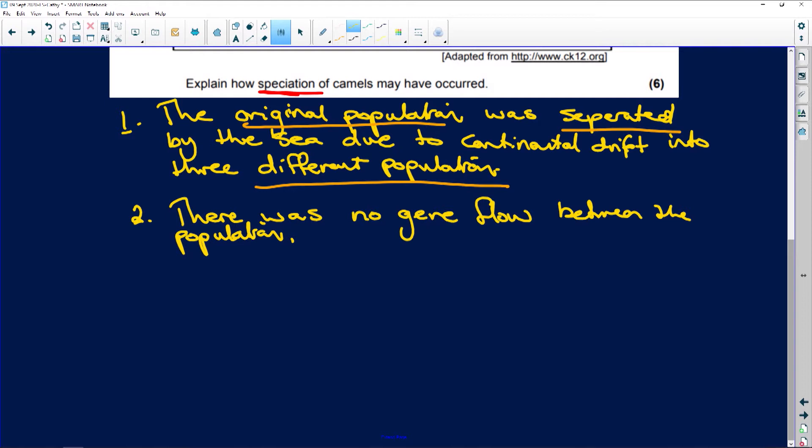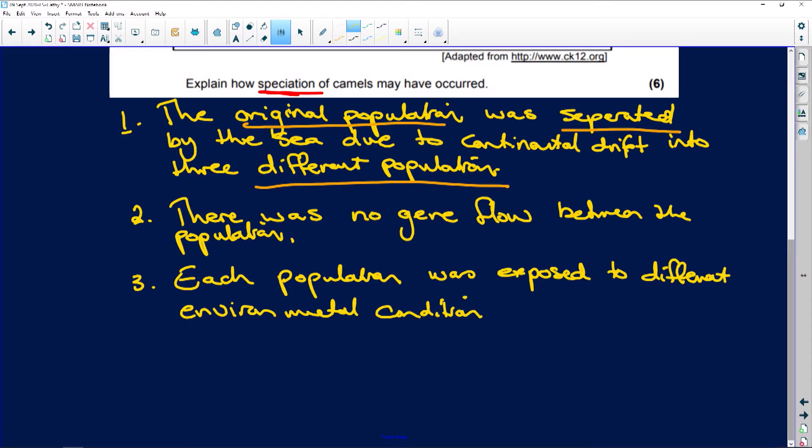Number three: Each population was exposed to different environmental conditions. That's very important, and that is your selection pressure.